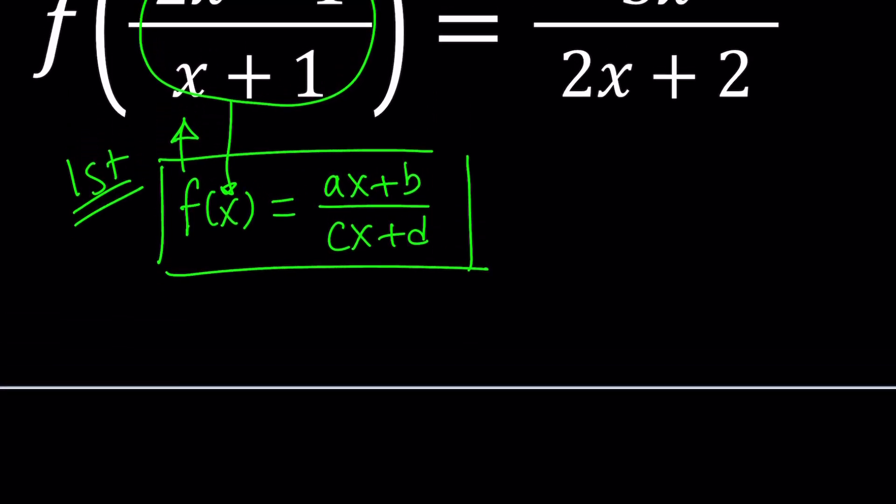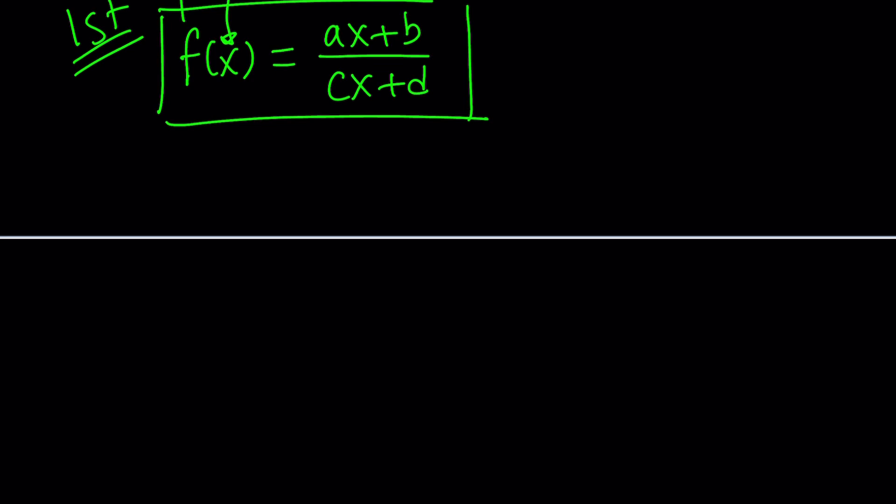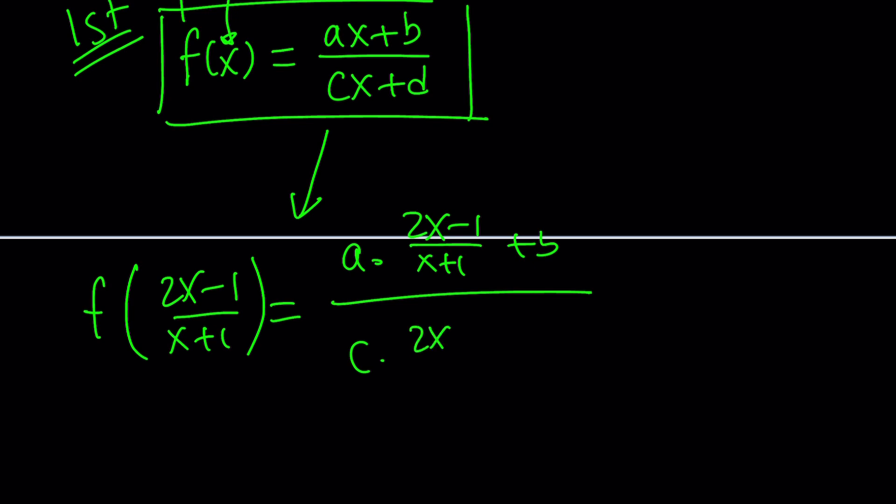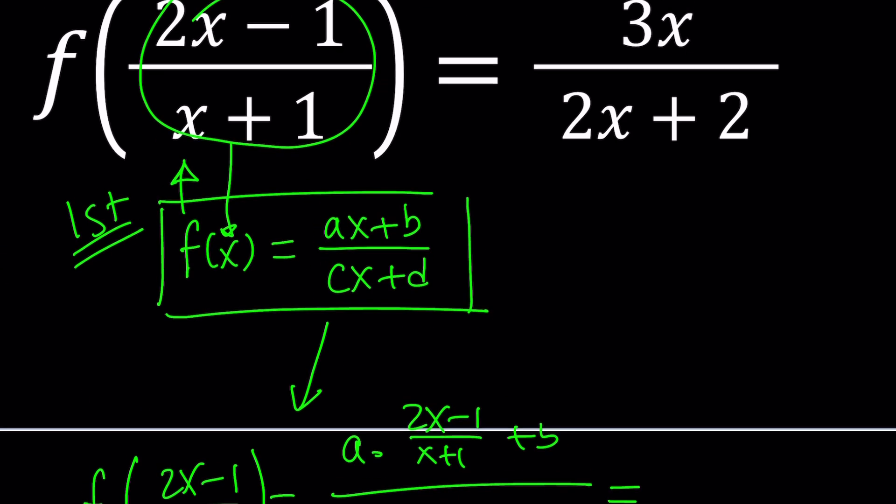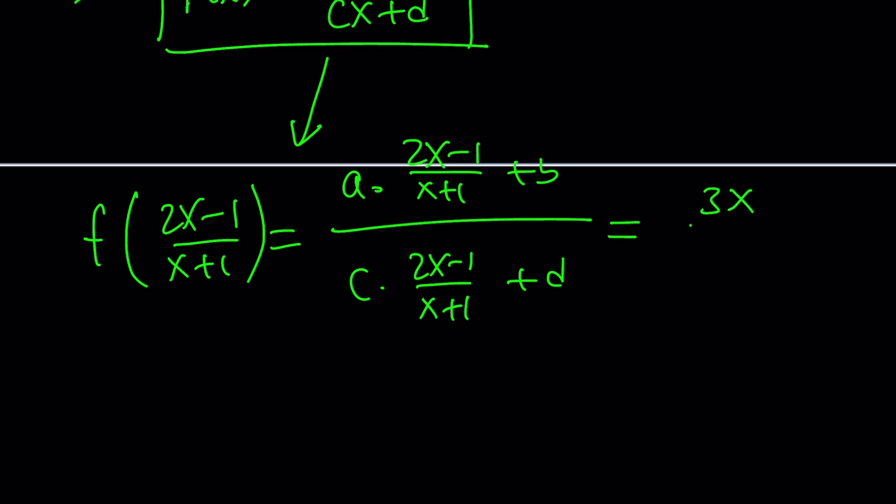Let's go ahead and do that. Replace x with 2x minus 1 all over x plus 1. So f of 2x minus 1 over x plus 1 is going to equal, based on our definition, a times 2x minus 1 over x plus 1 plus b divided by c times 2x minus 1 over x plus 1 plus d. And this is supposed to equal 3x over 2x plus 2.